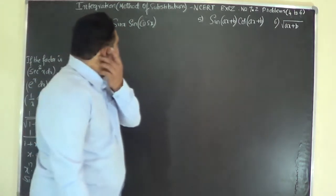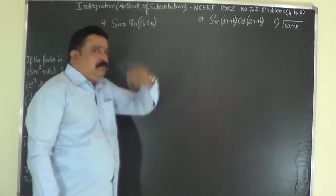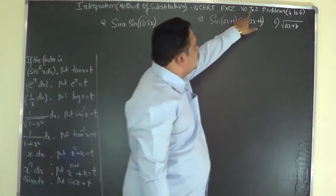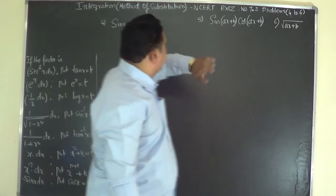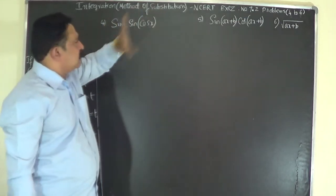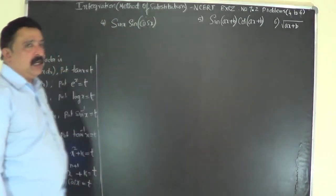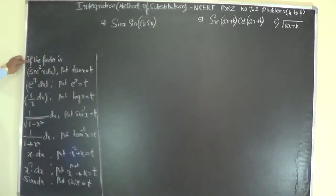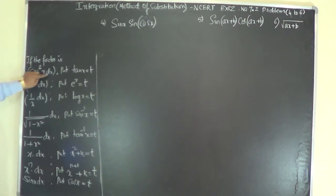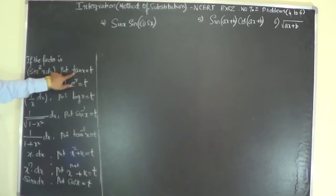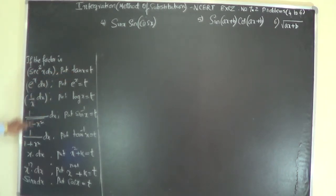We shall now consider the next three problems of Exercise 7.2 based on the method of substitution. Whenever the given function consists of secant squared x dx, the main substitution is tan x equals t. Please make sure you are thorough with this substitution list before doing any problems.